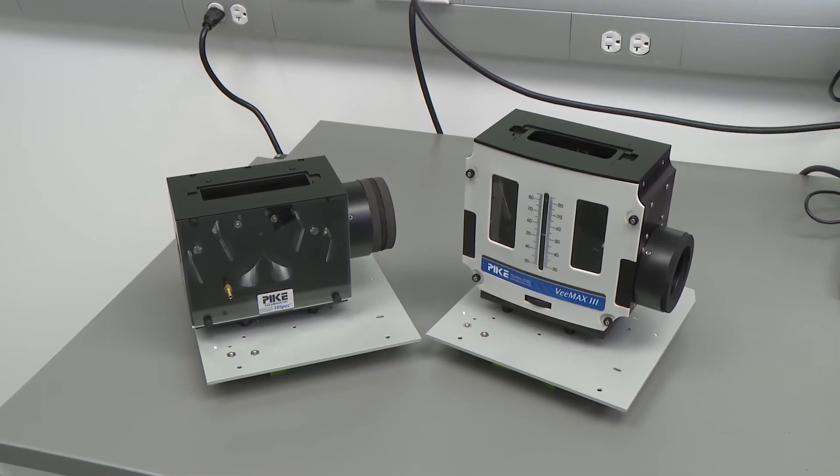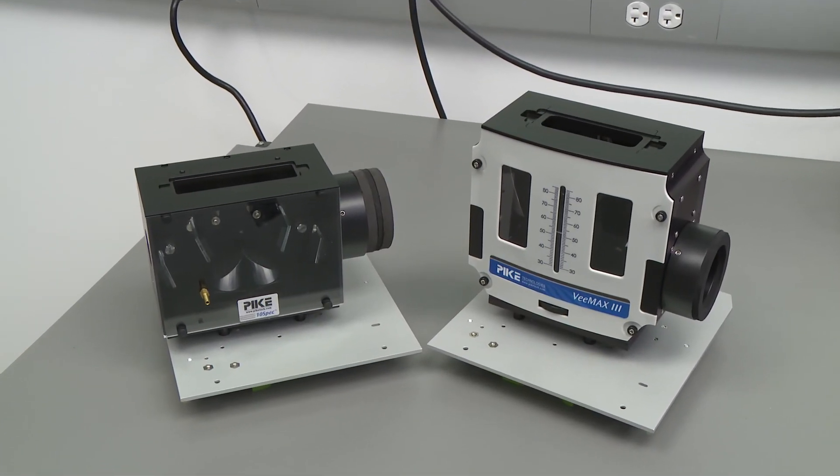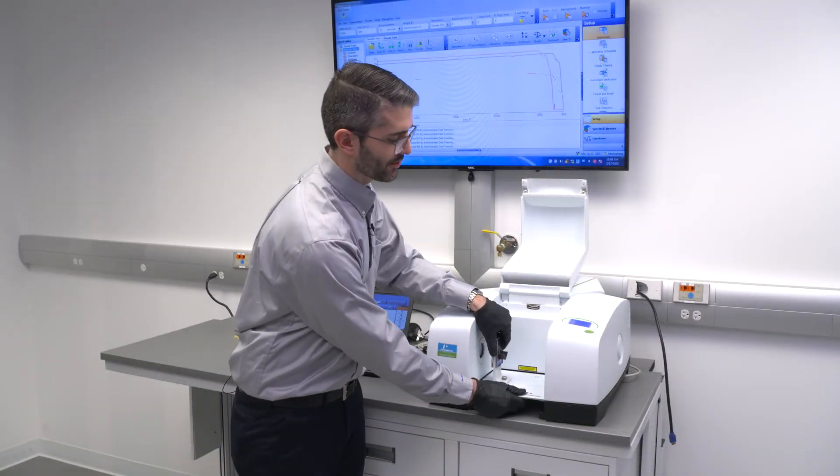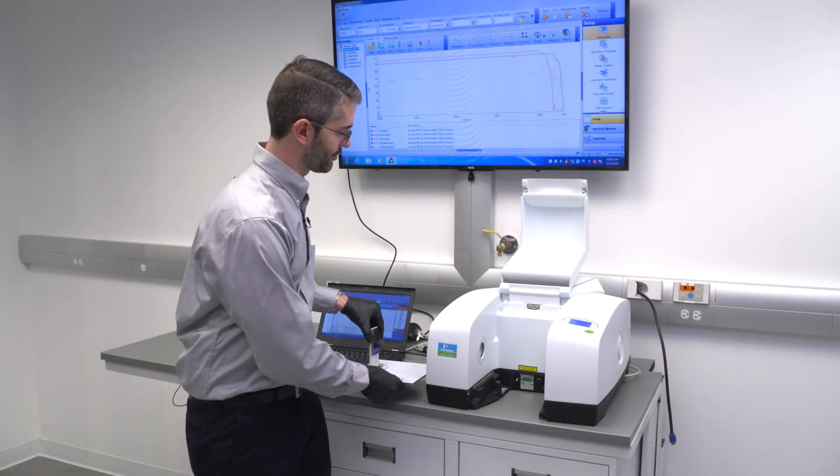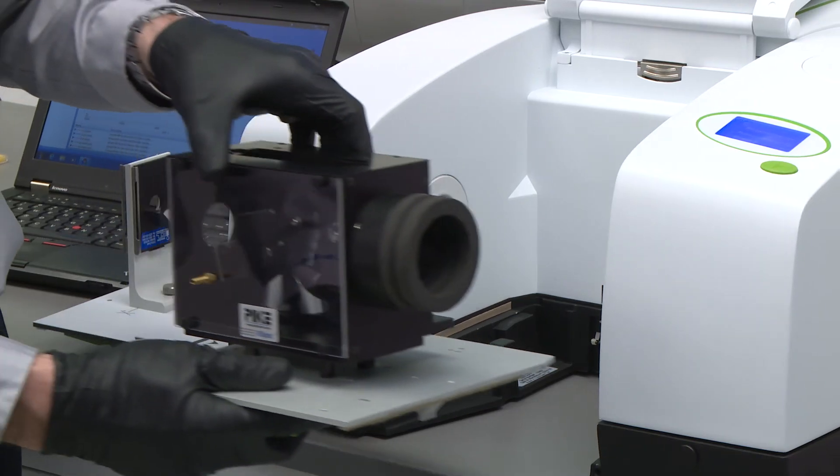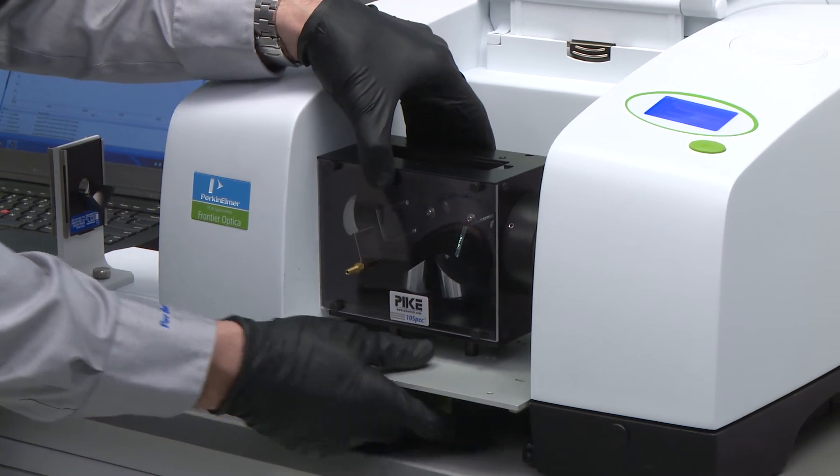As with Perkin-Elmer's other FTIR technologies, sampling accessories are interchangeable in the Frontier Optica. Replacement of sampling accessories is quick and easy. This allows users to tailor the instrument to a variety of experimental requirements.